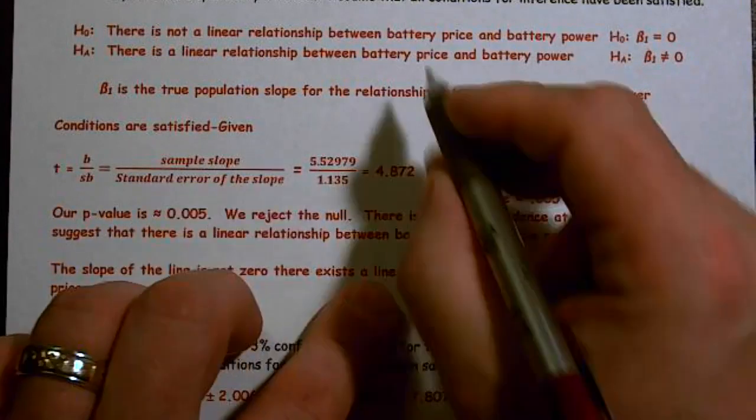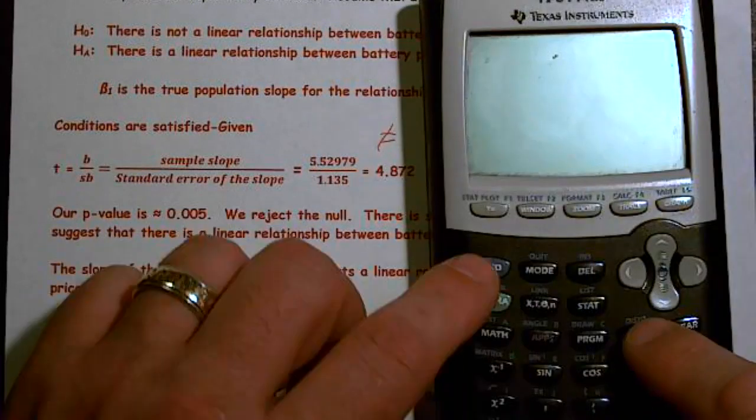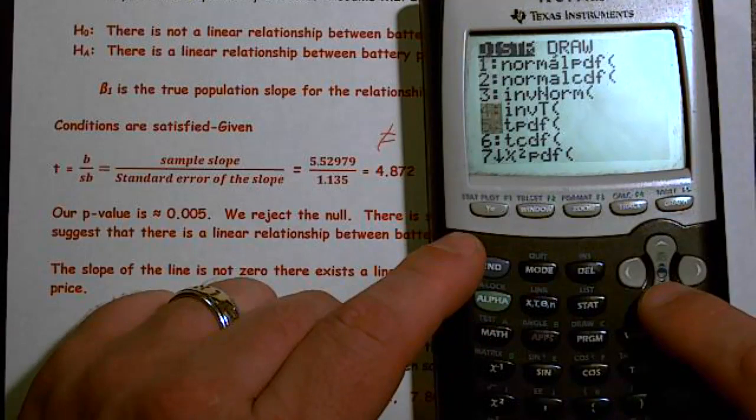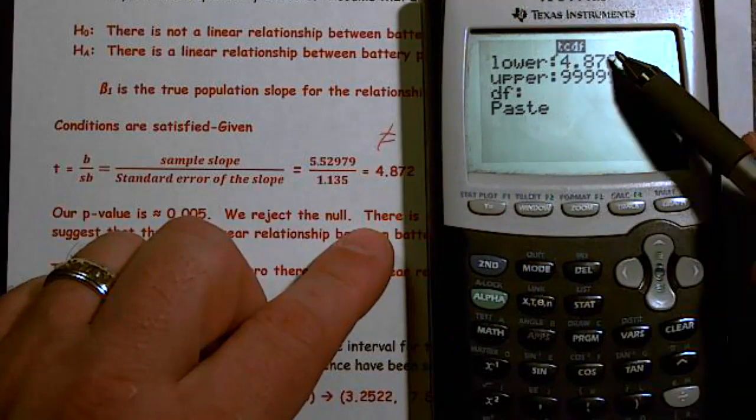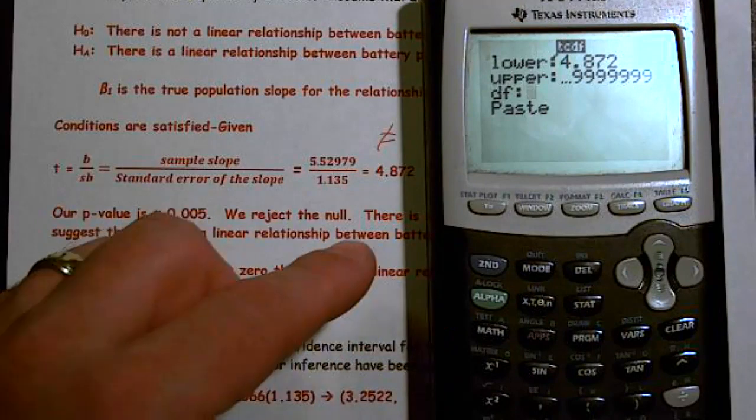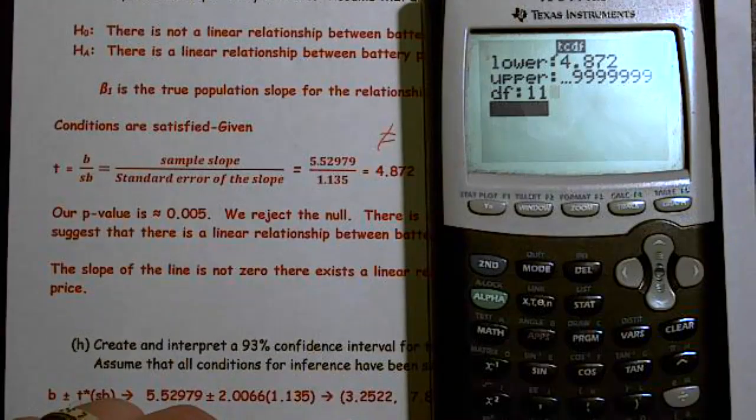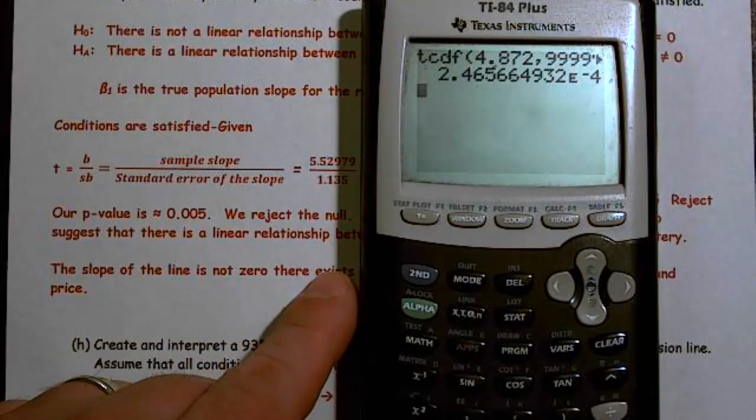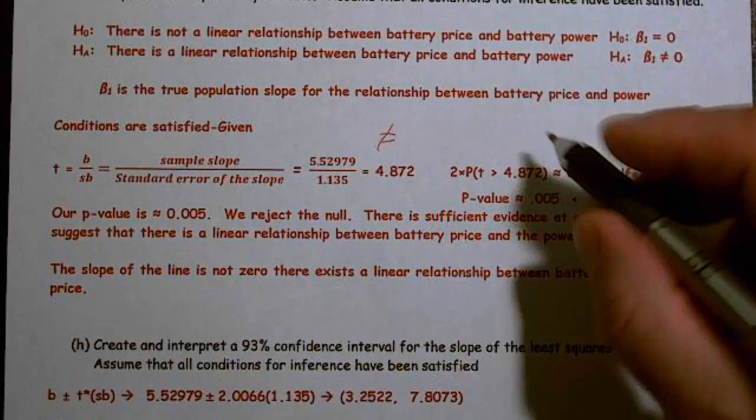So because our alternative is not equal to, we need to have a two times. So I'm going to turn my calculator on and then second VARS, TCDF, lower bound 4.872, upper bound 99999. This is my lower bound because it's positive. If it had been negative, it would have been my upper bound. My degrees of freedom, that came straight off of this. It was really 13 minus 2. Well, 13 minus 2 is 11, and they actually gave that to me. And I end up getting a very small, but I multiply that times 2, and I get 0.0049, which is about 0.005.